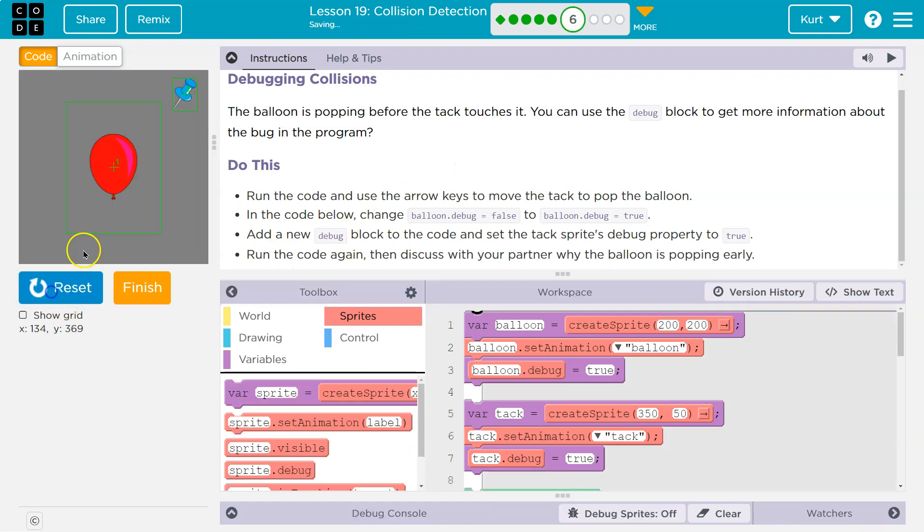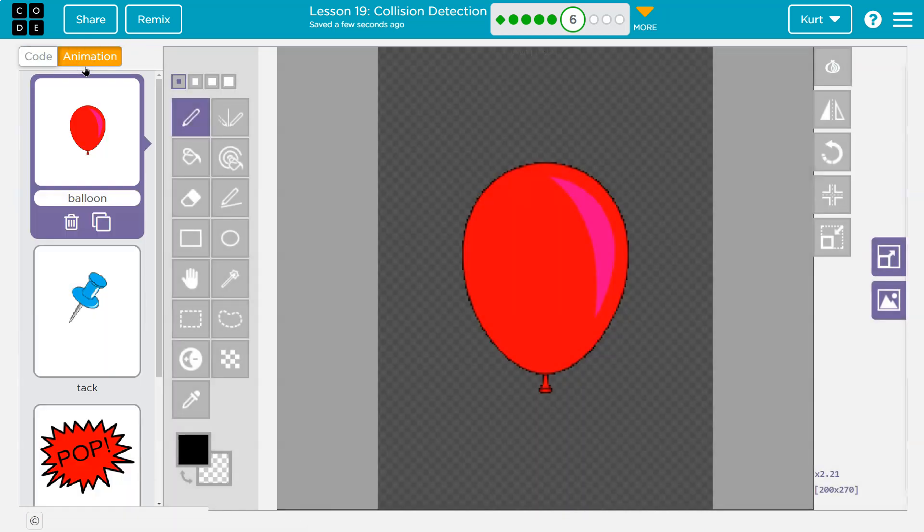So why would that be happening? Why are these green outlines showing? These must be the actual edges of the images. Let's take a look at, oh, and look at this. Here's our balloon and look how big the space around it is.